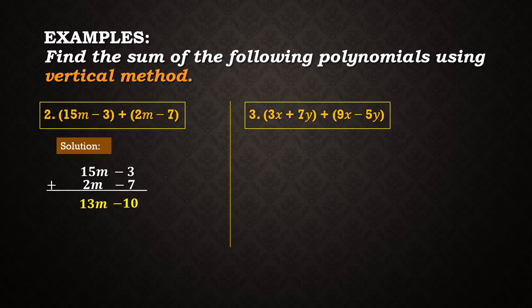For example number 3, we have 3x plus 7y plus the quantity 9x minus 5y. Again, we align like terms or similar terms and add them. 3x plus 9x is equal to 12x, and 7y plus negative 5y is equal to 2y.